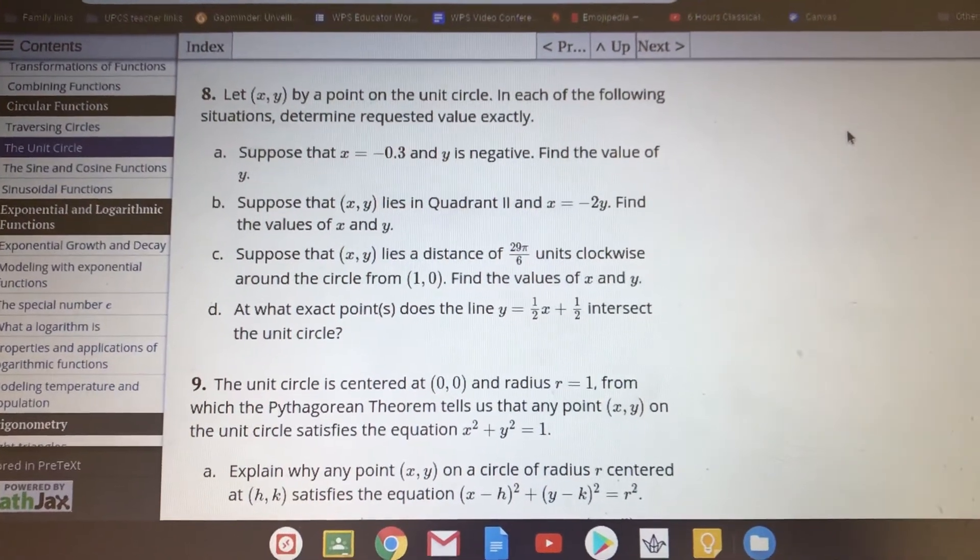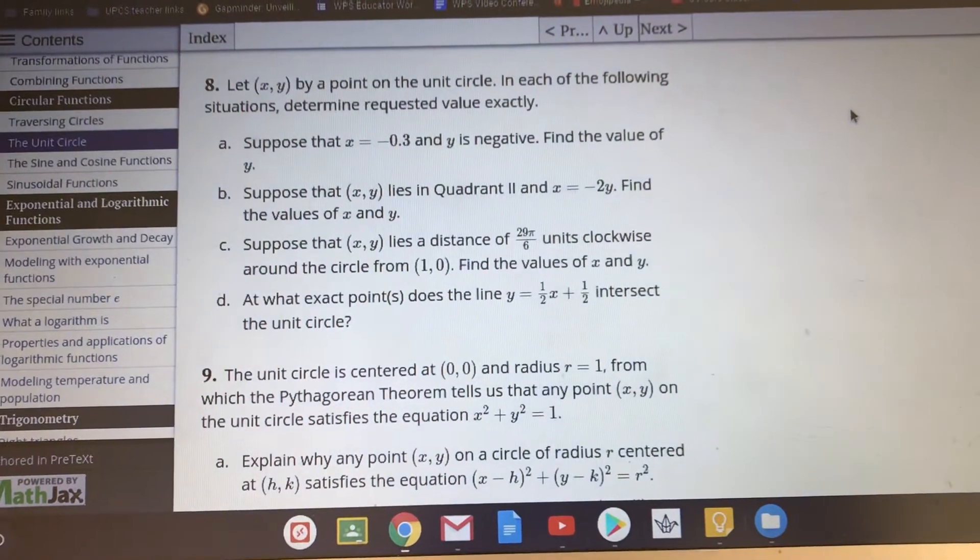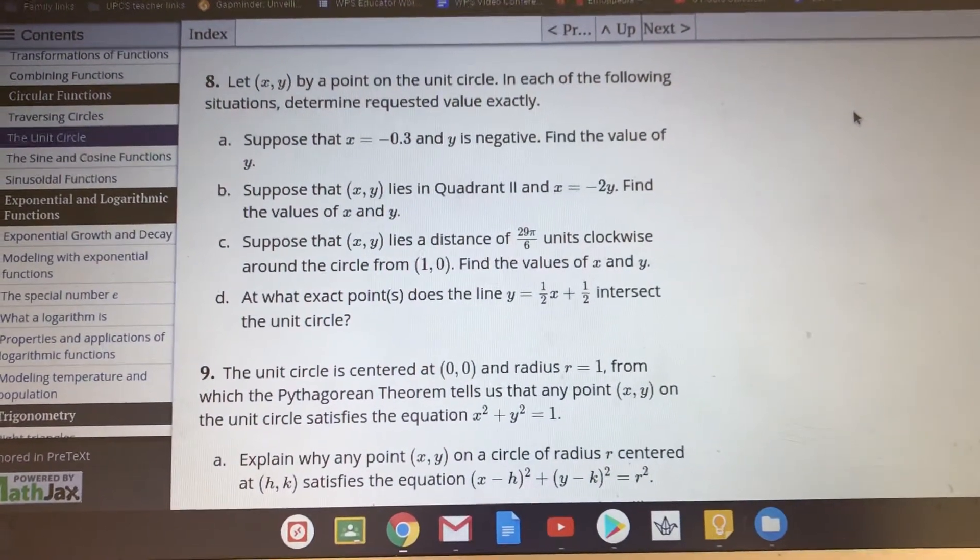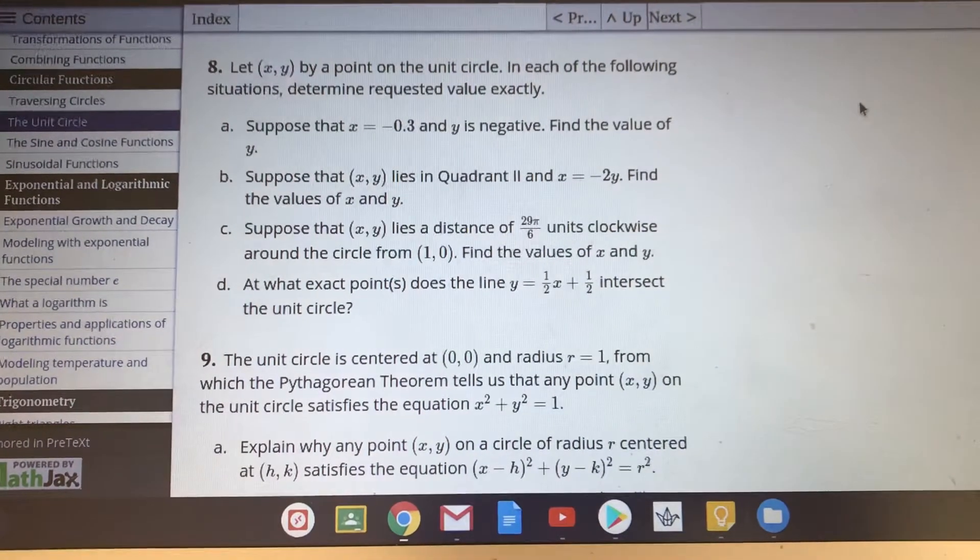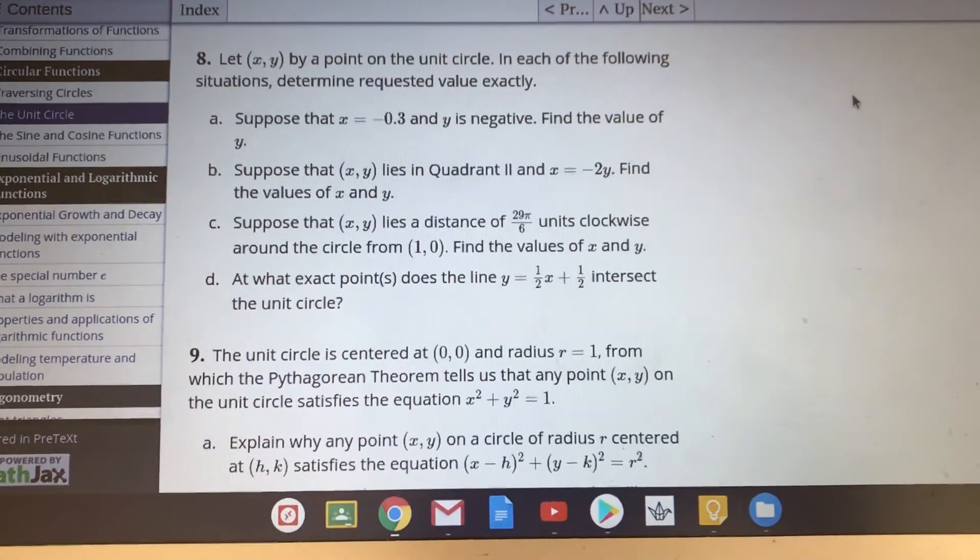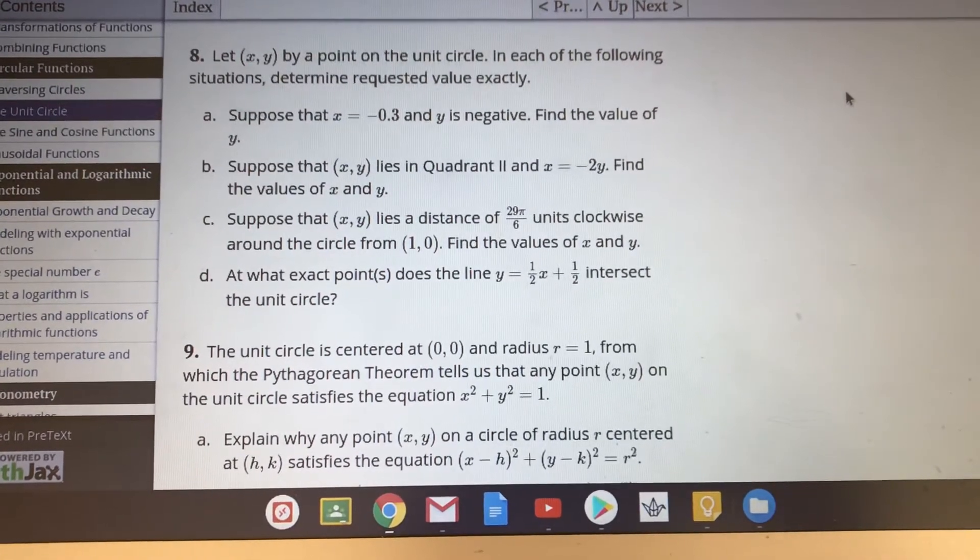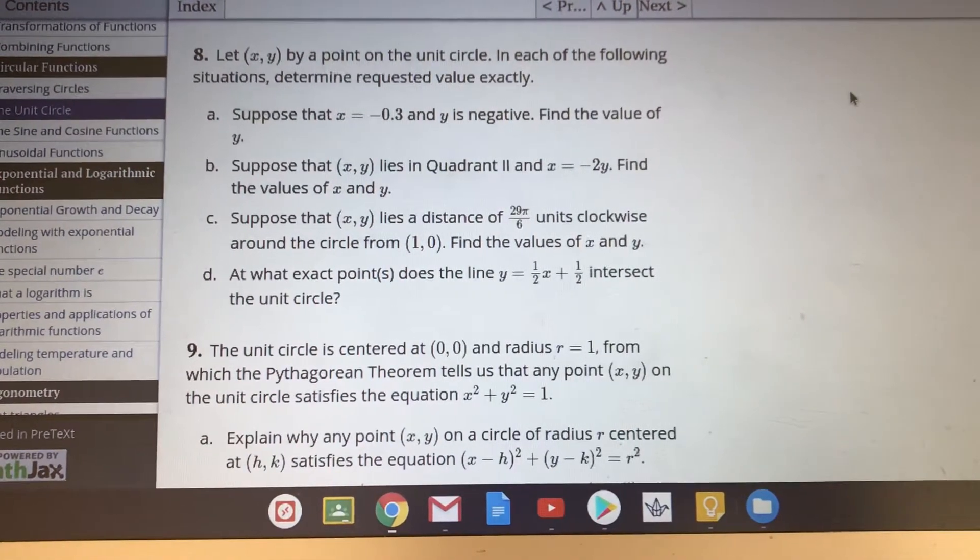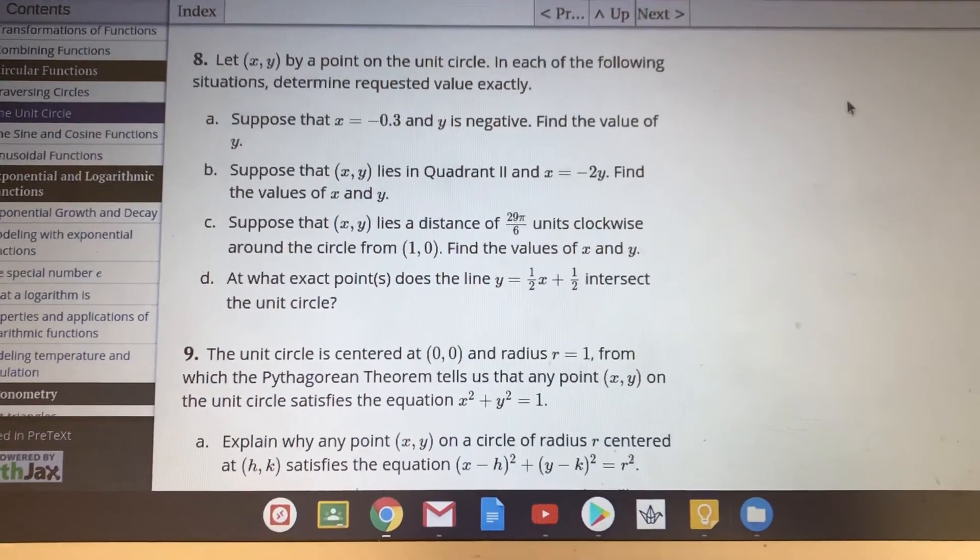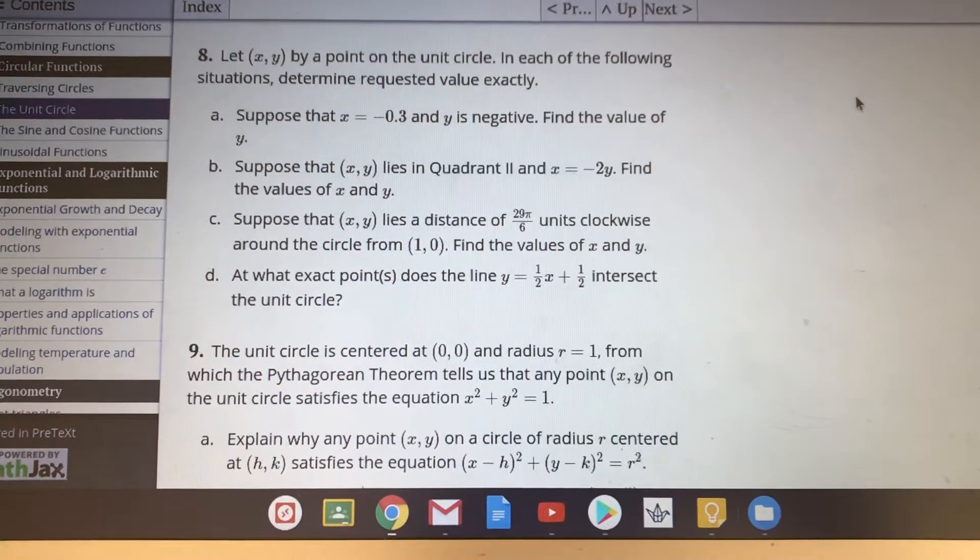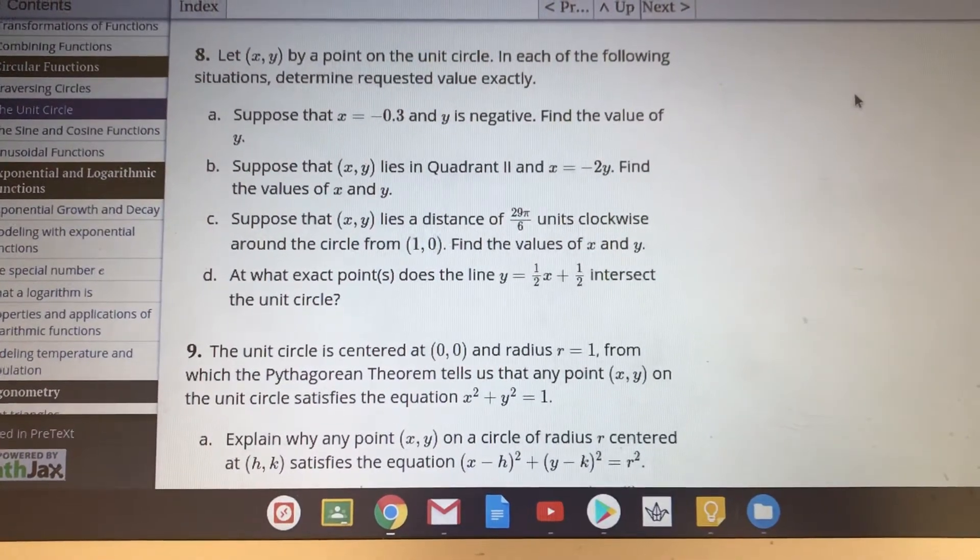Alright, welcome. So we're going to look at number eight from the unit circle section. I'm going to do this a little low-tech because I think that will help if we can do some of the algebra out. Problem eight has to do with finding a point on the unit circle, and there are lots of different things going on, but all of these parts a, b, c, and d essentially come down to the same equation.